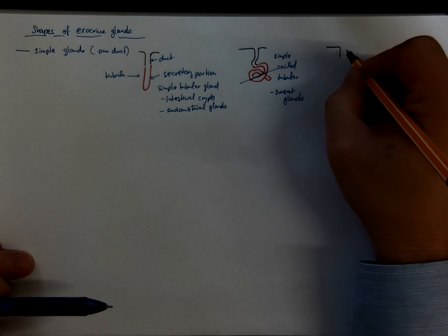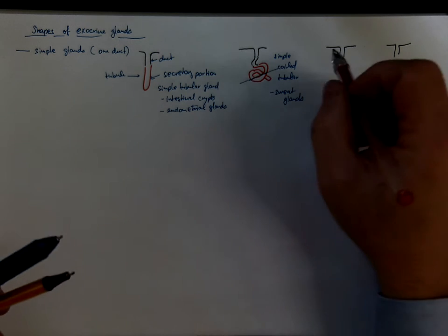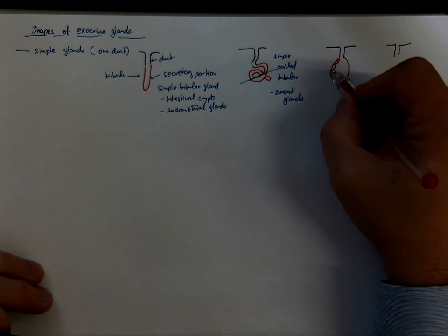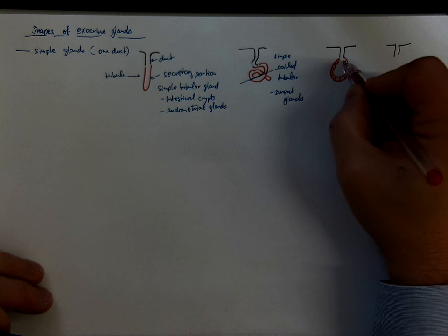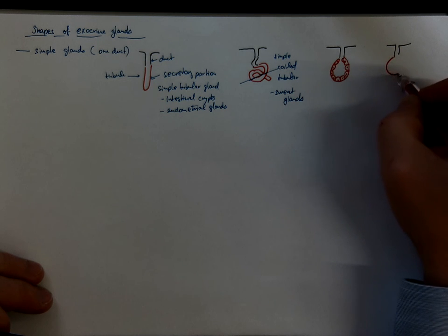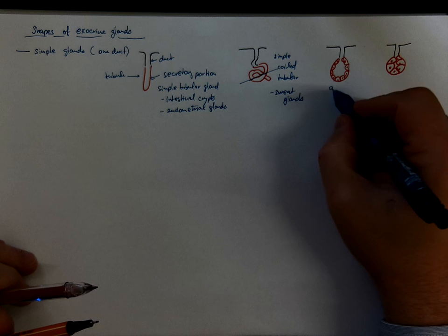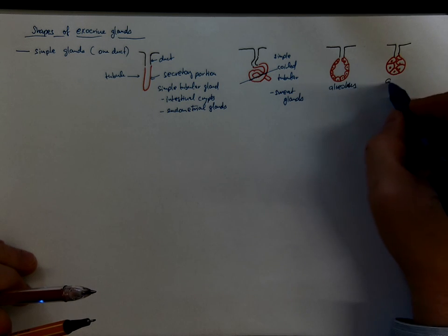Other shapes of the secretory portion might be alveoli or acini. A singular would be acinus which is similar to alveoli but the cells are filling most of the space. So this is alveolus and this is acinus.